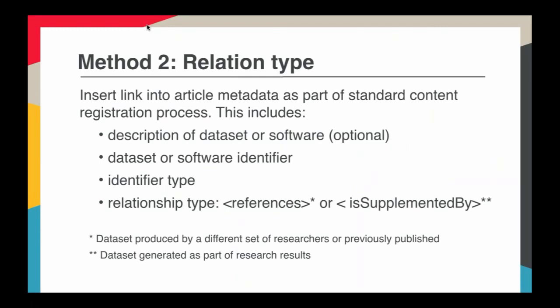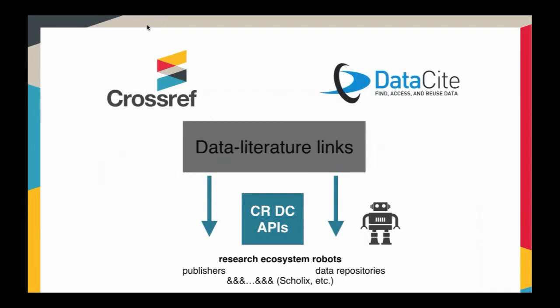How do we know which one is associated with data or software or which ones and what kind? So this leads us to method two. In this one, it's really just including information or the metadata about the data citation or software citation into the XML which you deposit with us. We have a schema that already accommodates these data citation links. And here, with the relationship type, you can specify whether or not the data was generated as part of this research or whether or not it was an analysis of other people's research. This is very simple. It just merely extends the metadata that you're already depositing with us.